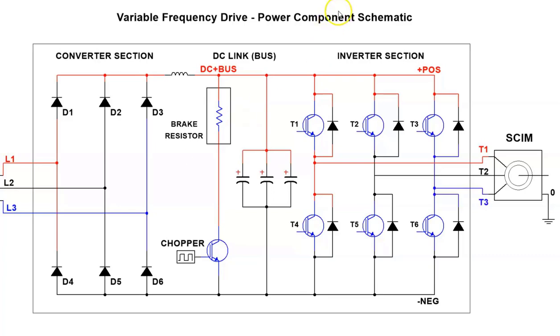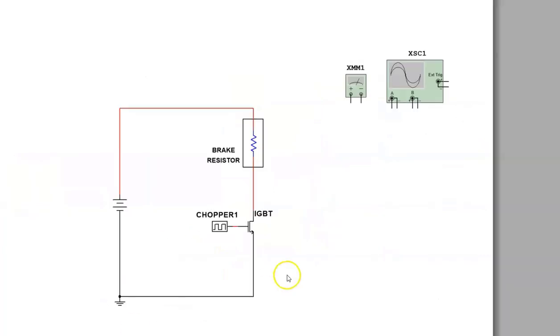Now what I have done is I have constructed a very basic chopper circuit so you can visualize what this circuit does. And I have it shown here. We have a DC source, this is just a DC bus, and we have a brake resistor. Again, it can be external or internal.